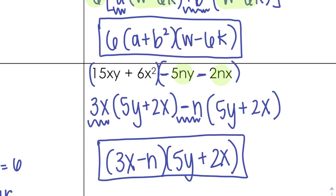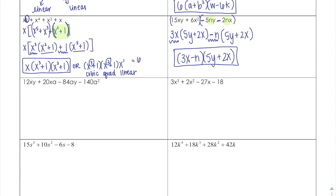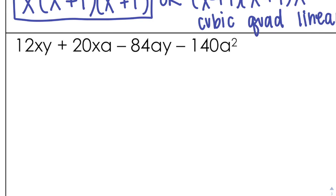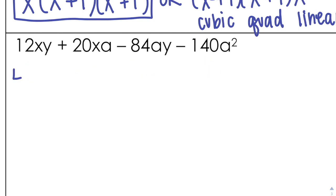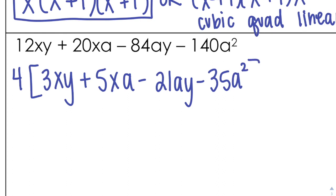The crazier it is, sometimes it's harder to get it in the right order — not as clear as the first one, and that's okay. Looking at this next problem, I have some pretty big numbers: 12, 20, 84, 140. There's not an 'a' in all of them — this one's missing an 'a'. If I take out a 2 I get 6, 10, 42, 70; I could take out a 2 again, so I want to factor out a 4. Using brackets since I'll split with parentheses from there, if I take out a 4 I'm left with 3xy + 5xa − 21ay − 35a².